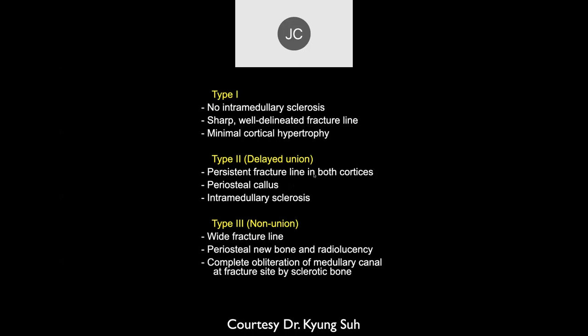Healing in delayed union can be variable and can take up to six months. Sometimes a CT scan is preferred over MRI because it can show early bony bridging of the fracture better. Type 3 is nonunion: you tend to have a widened fracture line, sclerotic margins on both sides, going all the way across with no evidence of bridging bony formation.